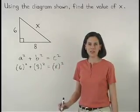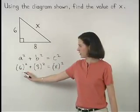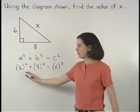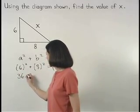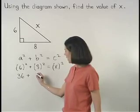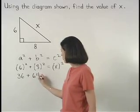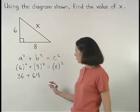Solving from here, 6 squared is 6 times 6 or 36, and 8 squared is 8 times 8 or 64.